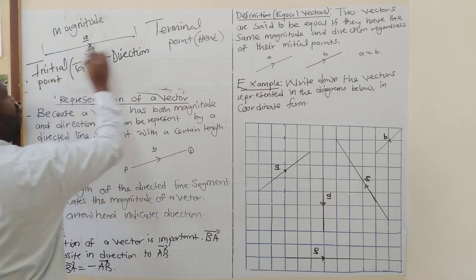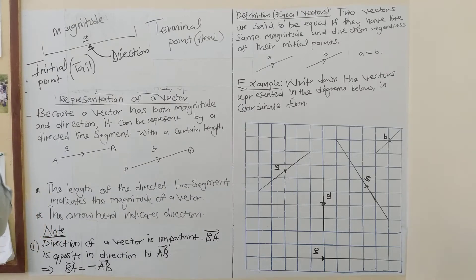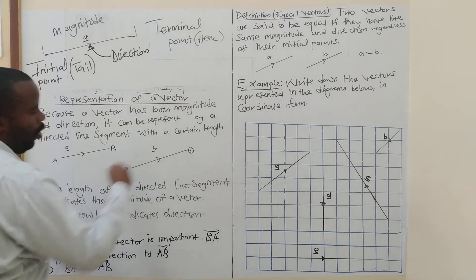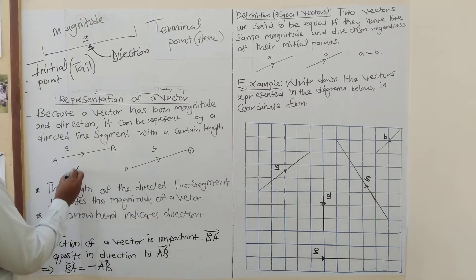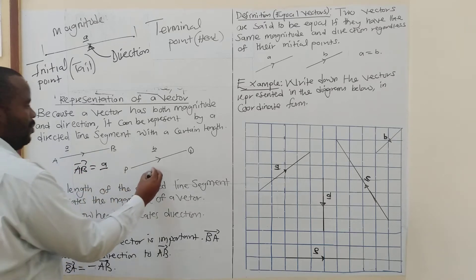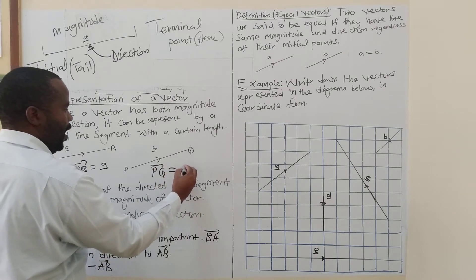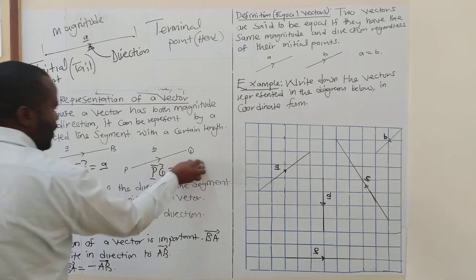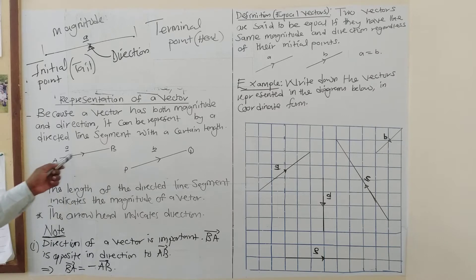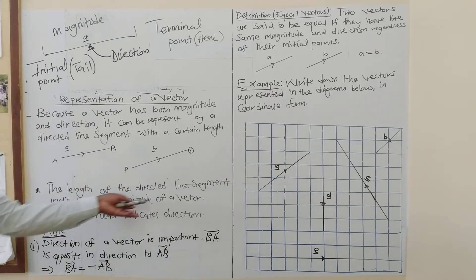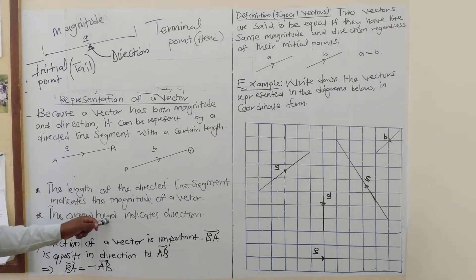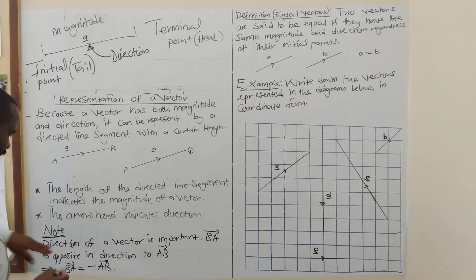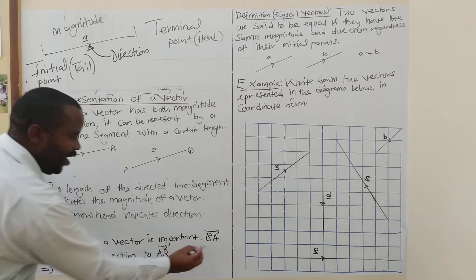Direction is very very important when dealing with vectors. If you have vector AB denoted by 'a', and vector PQ denoted by 'b', then AB equals 'a' and PQ equals 'b'. The arrowhead tells you you're traveling from A going to B, or from P going to Q.